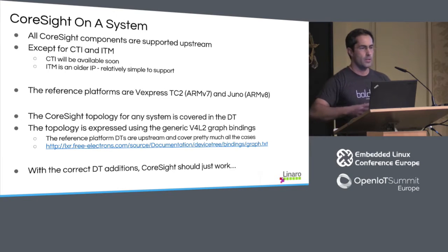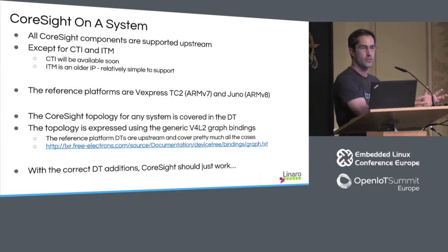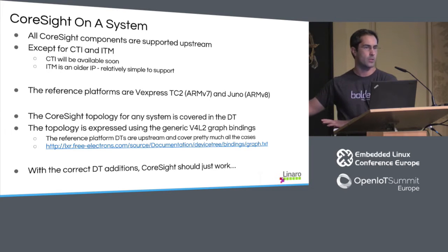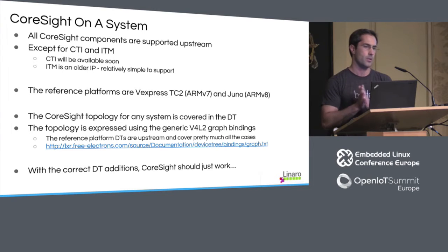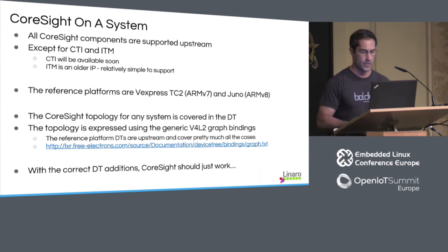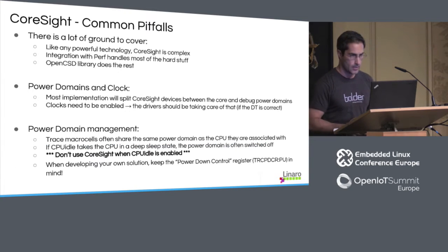When talking about Coresight, everything is platform dependent — topologies will have different ways of configuring things. That's why we've decided to push everything to the device tree, which simply lists the devices you have using the bindings. The graph bindings used for Video for Linux are reused here to tell the framework what kind of topology we have for a specific SoC. When you have that, things should just work — but as usual, the devil is in the details.